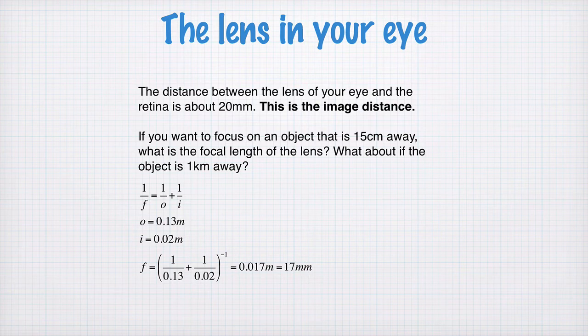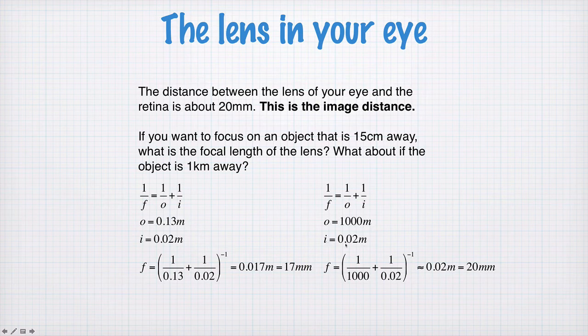What about when the object is 1km away? Same equation, but now the object distance is 1000m and the image distance is still 20mm. The focal length is 1/(1/1000 + 1/0.02). Since 1/1000 is much smaller than 1/0.02, the focal length is approximately 20mm.